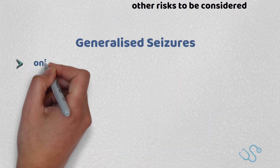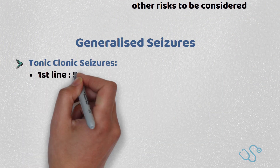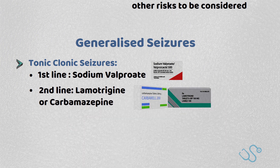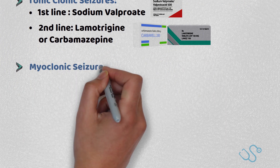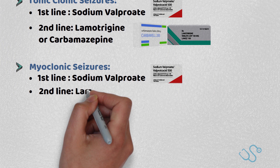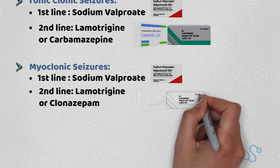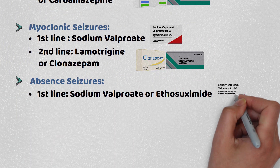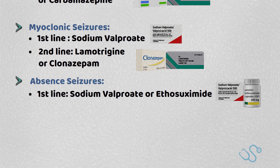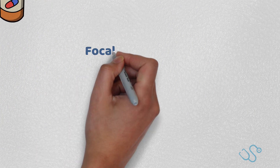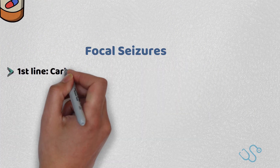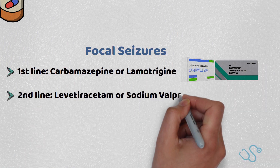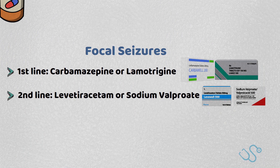For generalized tonic-clonic seizures, first line is sodium valproate, with second line lamotrigine or carbamazepine. For myoclonic seizures, first line is sodium valproate, with second line lamotrigine or clonazepam. For absence seizures, first line is sodium valproate or ethosuximide. For focal seizures, first line is carbamazepine or lamotrigine, with second line levetiracetam or valproate.